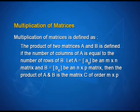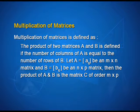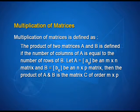Multiplication of matrices: the product of two matrices A and B is defined if the number of columns of A is equal to the number of rows of B. Let A be a matrix of order m by n and B be a matrix of order n by p; then the product of A and B is the matrix C of order m by p.